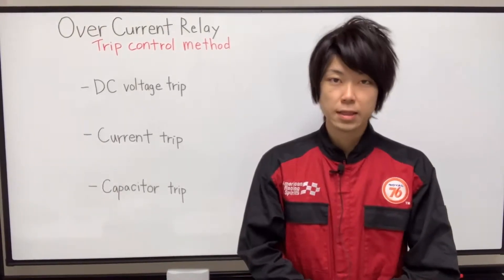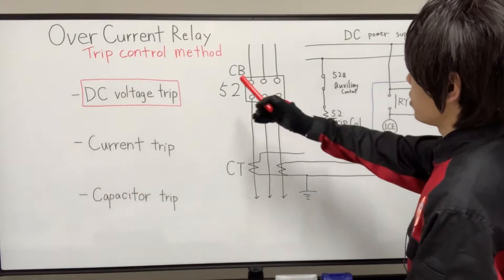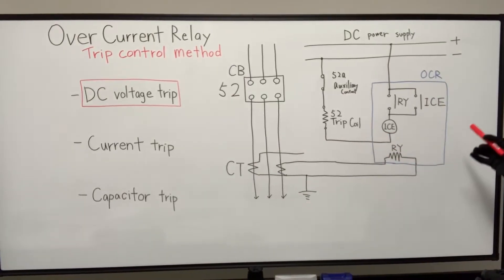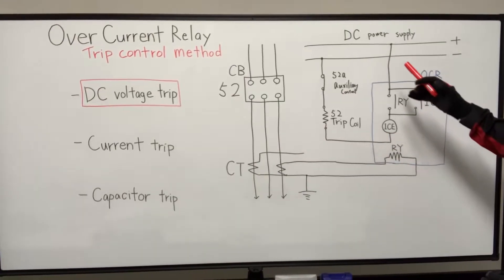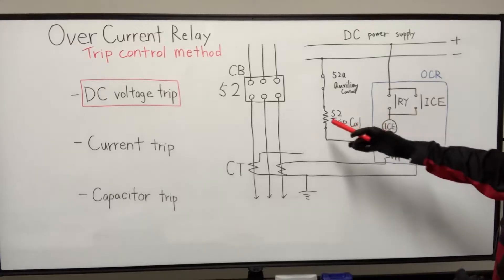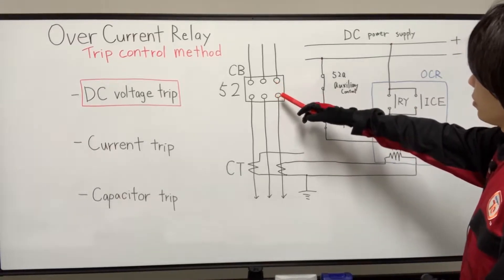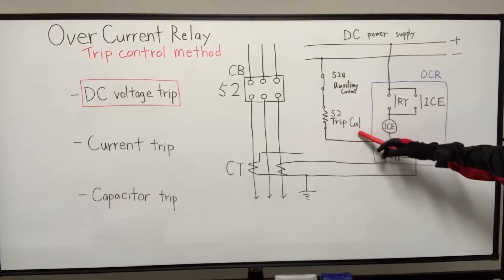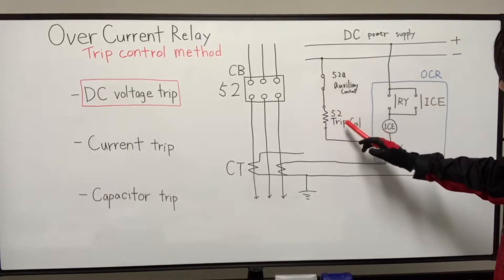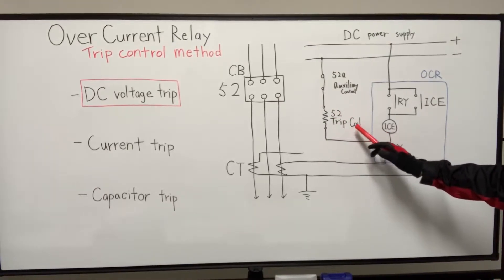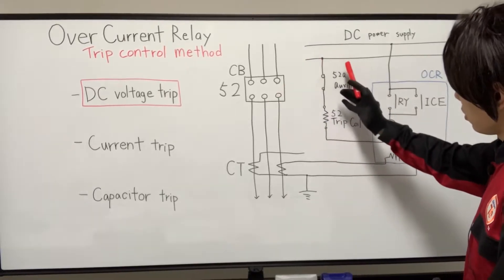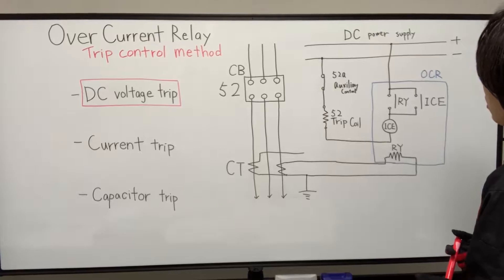So let's get started. Let's start with DC voltage trip. In this method, control circuit is external DC power supply. And as shown in this diagram, the circuit breaker 52 contains the trip coil which led to 52 trip by being energized himself. I mean, if trip coil is energized, 52 will trip.